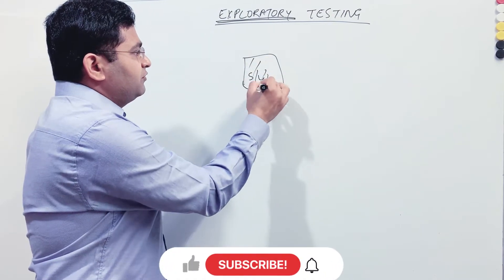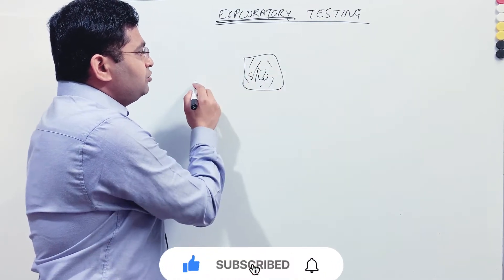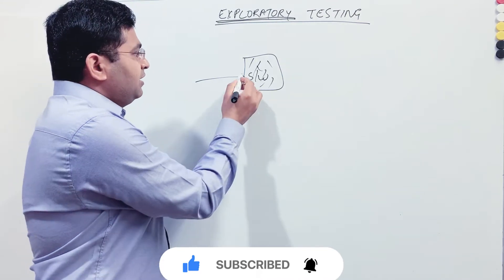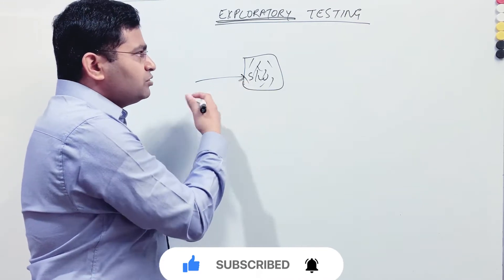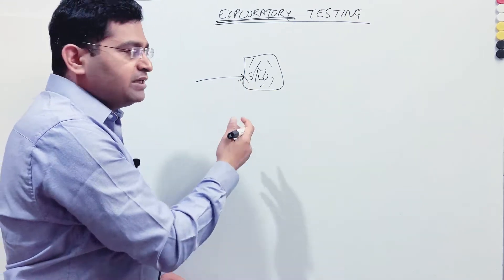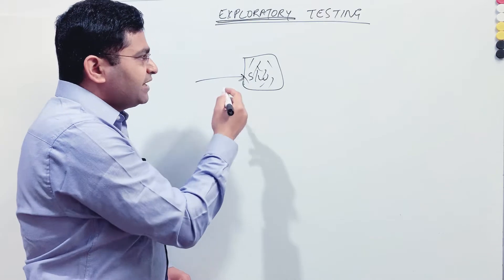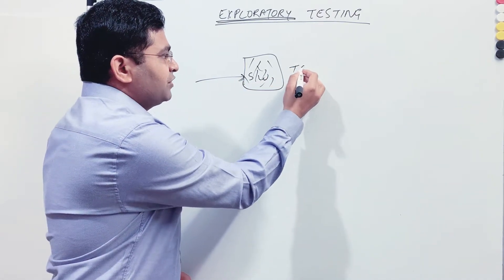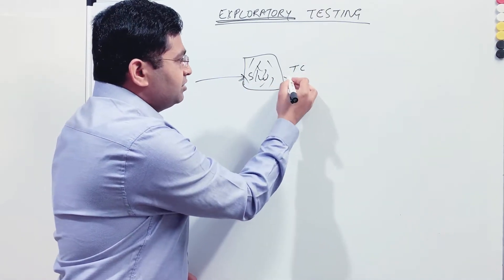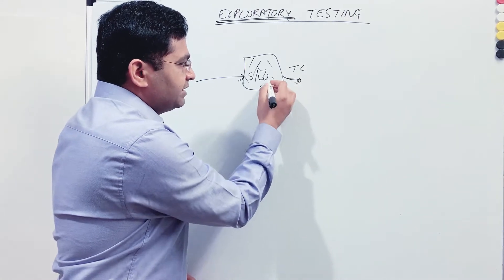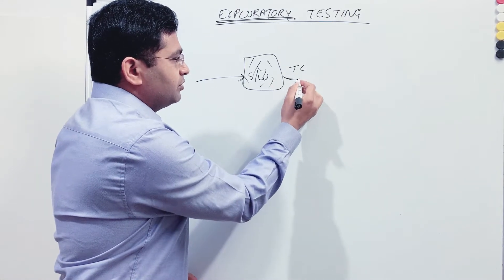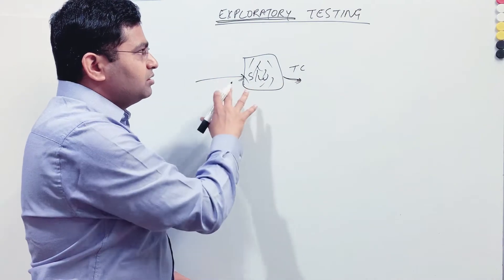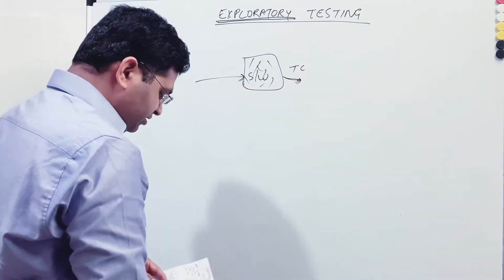For example, this is your software — the black box — and you start using that particular application. Once you start using the application, you explore it, and based on that exploration you start writing test cases, you start documenting, and you also start execution. That is what exploratory testing is all about.